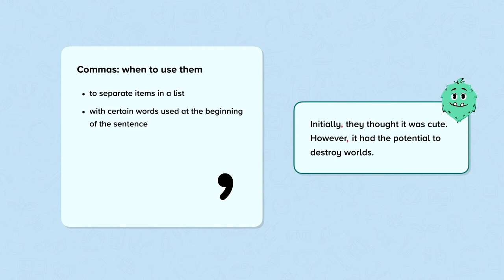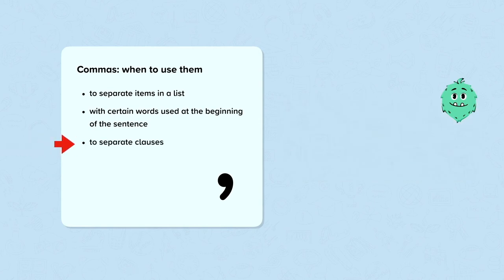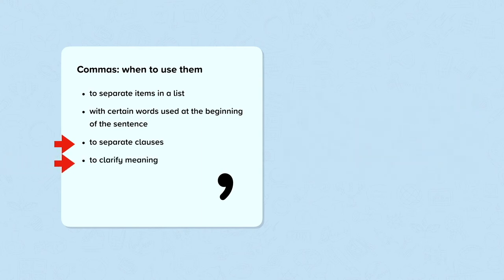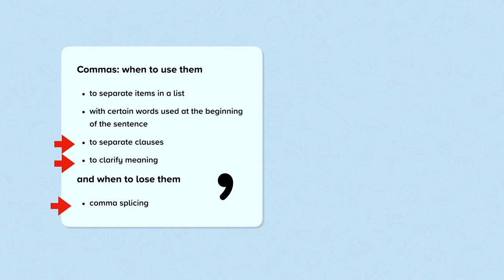What we are going to look at today is how to use commas to separate clauses. For example: "The creature, which had arrived on Earth only a month before, decimated the planet." The commas are used to separate the clauses, and we're going to look at the rules surrounding comma use here. We're also going to look at using commas to clarify meaning, and also when not to use commas. Comma splicing is when commas are incorrectly used in a sentence when another form of punctuation or a different word is needed.